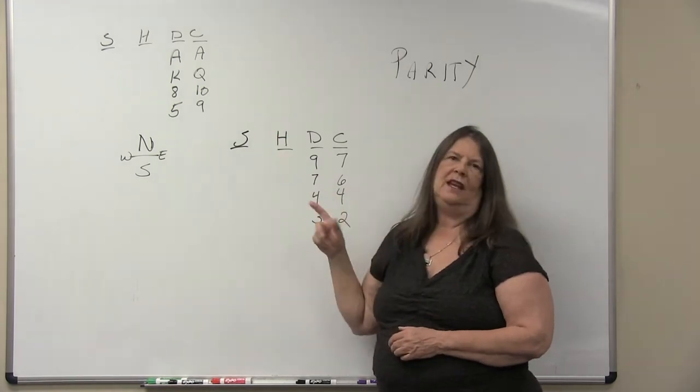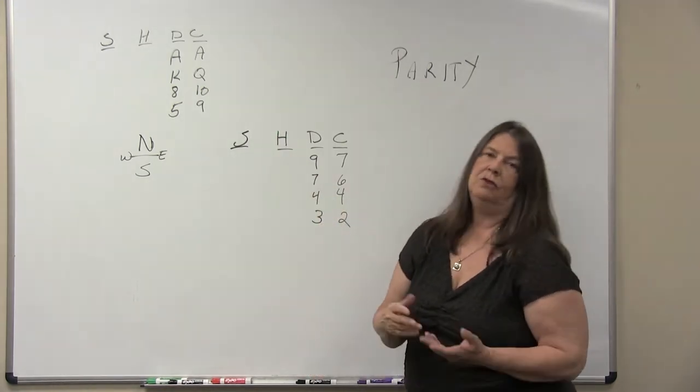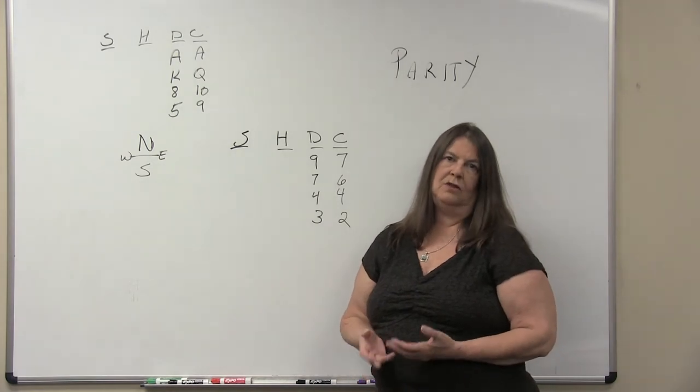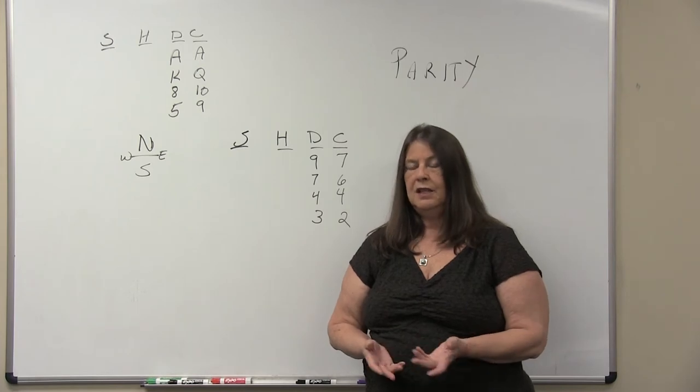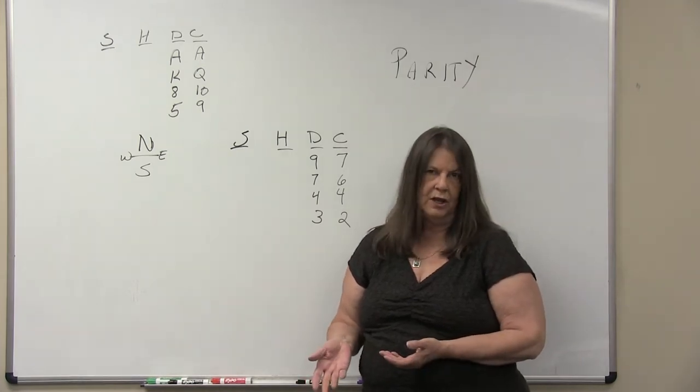We have between our two hands eight diamonds. There's only 13 cards in each suit. So the opponent and my partner have five split between their two hands. Typically that would be three in one hand, two in the other.